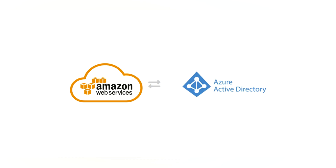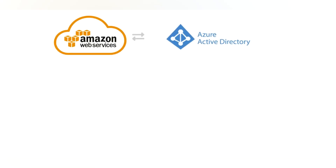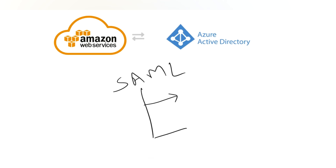To integrate Azure Active Directory with AWS, we use a protocol called SAML — Security Assertion Markup Language. With SAML, we need to consider two things: the Service Provider, which is seeking the service (in this case AWS), and the Identity Provider, which provides the identity service — in this case Azure Active Directory.